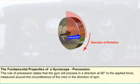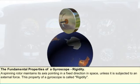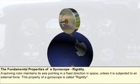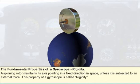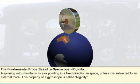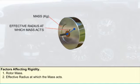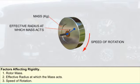The force applied appears to have moved 90 degrees in the direction of spin. A spinning rotor maintains its axis pointing in a fixed direction in space unless subjected to an external force — this property is called rigidity in space, or gyroscopic inertia. There are three factors which affect rigidity in space: the rotor mass, the effective radius at which the mass acts, and the speed of rotation.